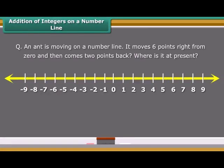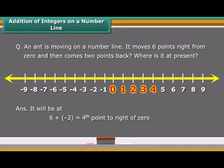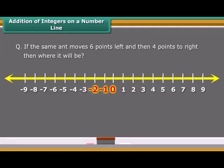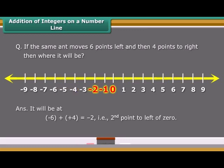An ant is moving on a number line. It moves six points right from 0 and then comes two points back. Where is it at present? It will be at 6 plus minus 2 equals the fourth point to the right of 0. If the same ant moves six points left and then four points to the right, then where will it be? It will be at minus 6 plus plus 4 equals minus 2, that is, the second point to the left of 0.